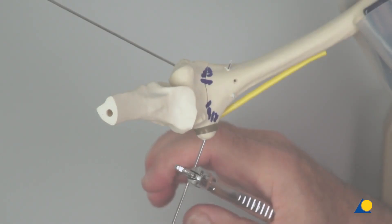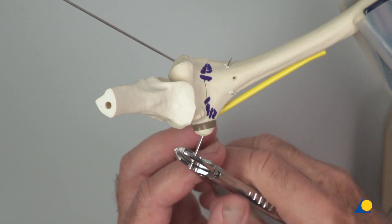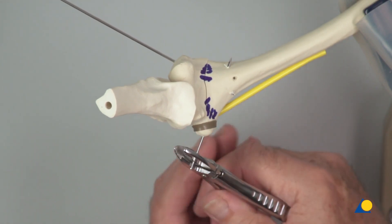The exposed K-wires are trimmed and bent to 90 degrees, taking care not to loosen the wire in the bone.